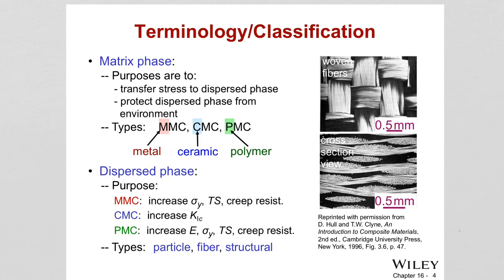The dispersed phase can be particles, fibers, or structural. As shown in the images, fibers don't have to be individual — they can be in the form of woven fibers. You can also see the cross-section view showing how they are woven to each other. The dispersed phase can take any form: it can be fibers or particles. Structural composites include laminates or sandwich panels.